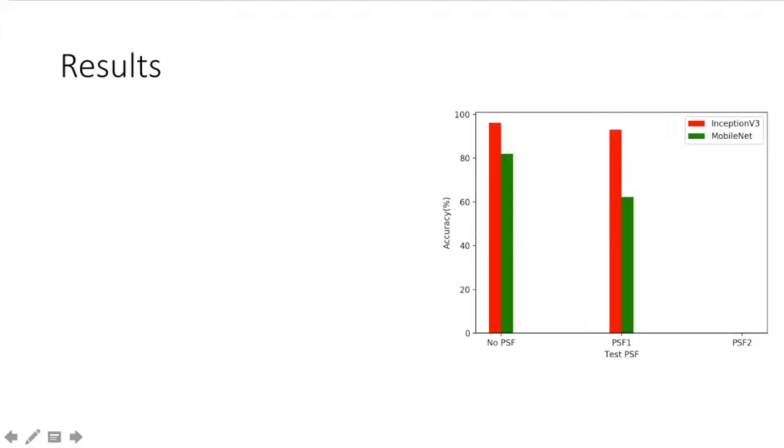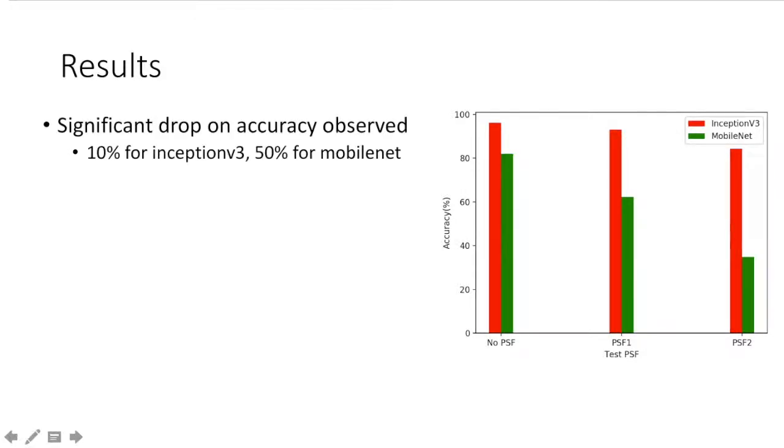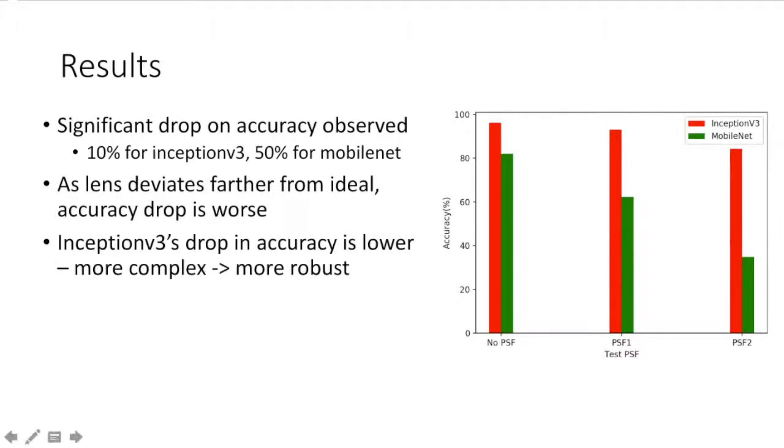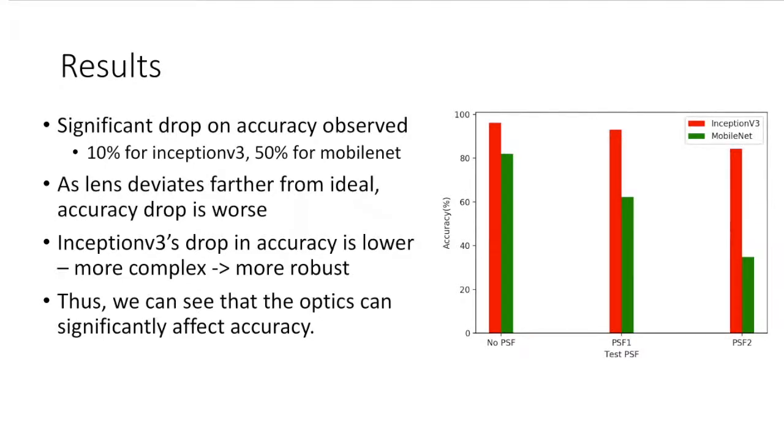However, when we model the test images through the first optical system, we can see that both CNNs drop in accuracy, and then this drop in accuracy continues for PSF2 as well. Overall, we see a significant drop in accuracy when we start considering less optimal optical systems. In the case of Inception v3, this drop in accuracy amounts to about 10%, while it amounts to up to 50% for MobileNet. This shows that as the lens deviates farther from ideal, the accuracy drop becomes worse and worse. Additionally, Inception v3's drop in accuracy is lower. This is likely because the more complex neural net is more robust to these types of optical changes. This leads us to the conclusion that when we're deploying a vision system, not considering the effect of optics can significantly affect the overall system performance, especially for neural nets with fewer parameters.